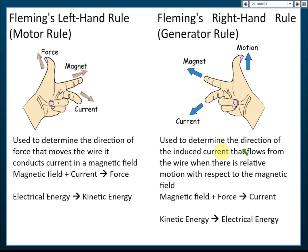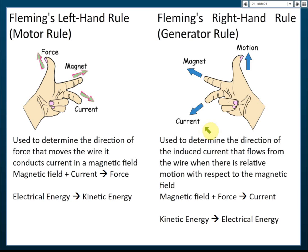Fleming's right hand rule is used to determine the direction of induced current when there is relative motion with respect to the magnetic field. For the right hand rule: magnetic field plus force produces current. For the left hand rule: magnetic field plus current produces force. The right hand rule is for electromagnetic induction where kinetic energy produces electrical energy; the left hand rule is where electrical energy produces kinetic energy. Make sure you know when to use each rule.